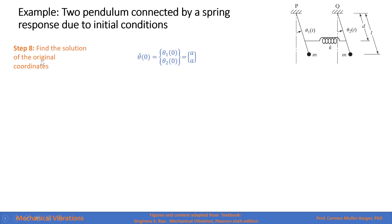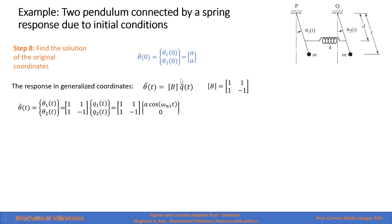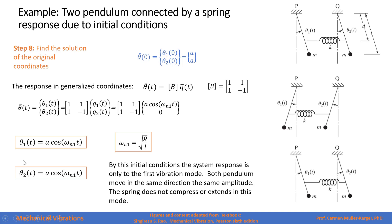The final step is to recover the original coordinates by multiplying the modal matrix by the principal coordinate response vector. The result is that both pendulums respond as A cos(ω₁t) — they vibrate with the same magnitude in the same direction at the first natural frequency. With this set of initial conditions, both pendulums move identically and the spring neither compresses nor extends.